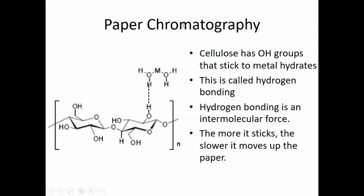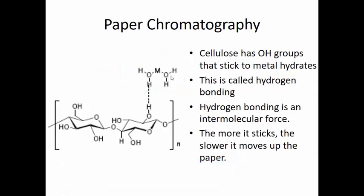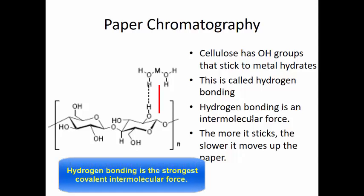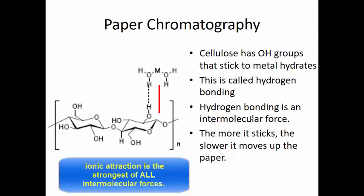Cellulose has hydroxyl groups on it, and those hydroxyl groups cause metal hydrates — a metal with water attached as a ligand — to stick or adhere to the cellulose better through hydrogen bonding. Hydrogen bonding is one of our intermolecular forces and is the strongest covalent intermolecular force. Other intermolecular forces include dipole interactions and van der Waals interactions, while ionic bonds are the strongest of all interactions.